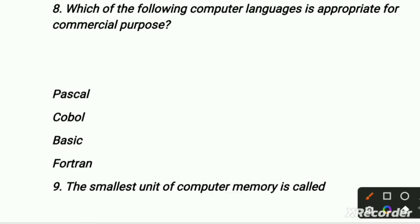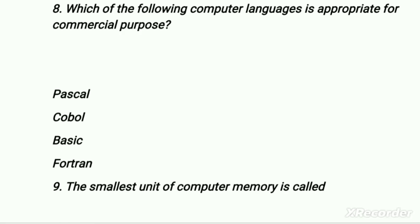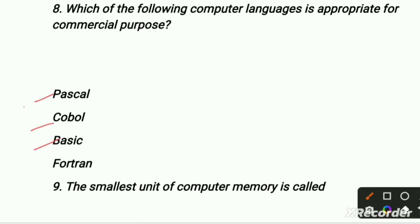Which of the following computer languages is appropriate for commercial purposes? First option is Pascal, second is COBOL, third is BASIC, and fourth is FORTRAN. Our right option is COBOL, because COBOL is a computer language which is appropriate for commercial use.